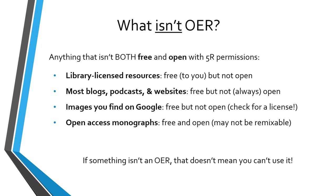In a galaxy of OER types, what isn't OER? Anything that isn't both free and open with the 5R permissions. This includes library licensed resources, which are free to you but not open. Most blogs, podcasts, and websites are free but not always open. Images you find on Google may be free but aren't necessarily open — be sure to check the license. Open access monographs may be free and open but may not be remixable. But remember, if something isn't an OER, that doesn't mean you can't use it. Some resource types, like library licensed resources, fall into the category of AER — affordable education resources.